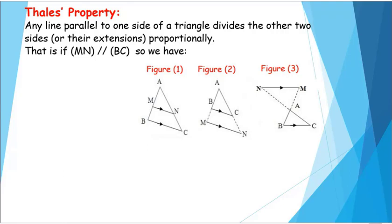That is, if MN is parallel to BC, then we have AM over AB equals AN over AC equals MN over BC. This relation is also true for figures two and three. These cases are cases of extensions.